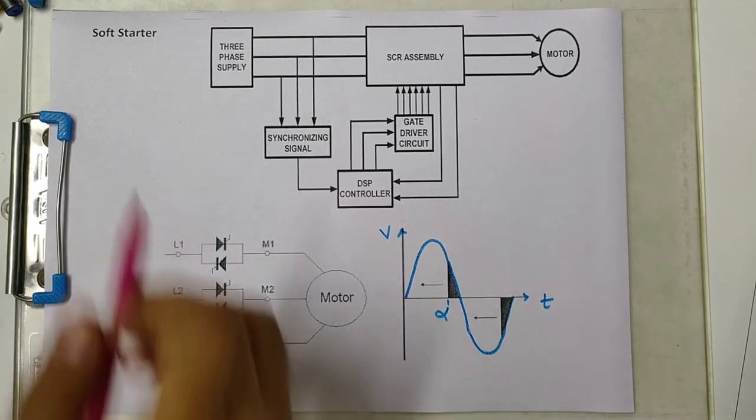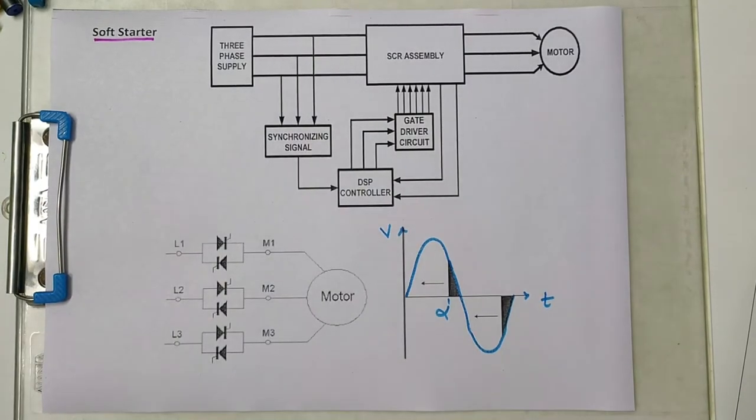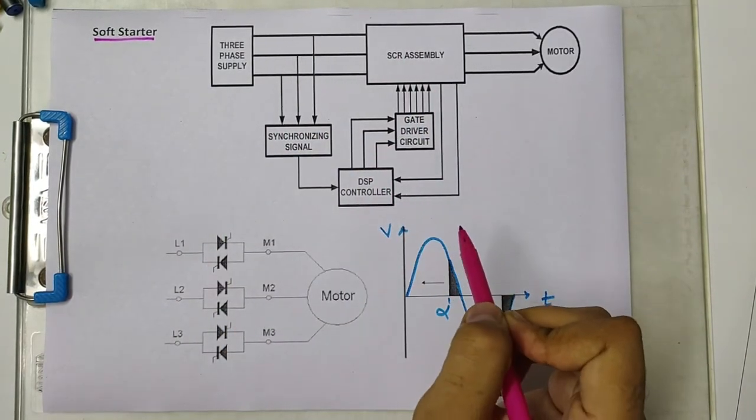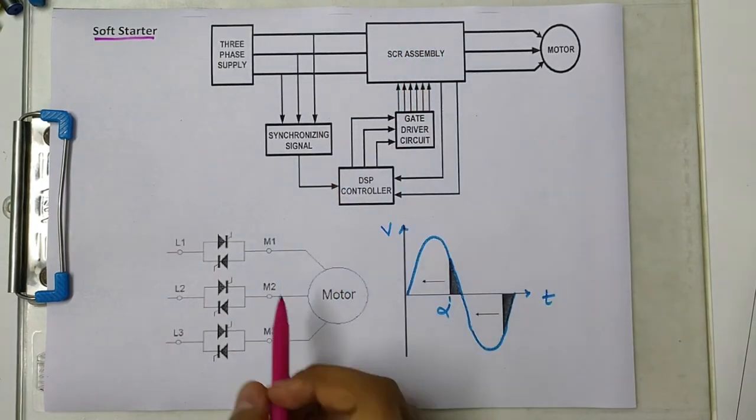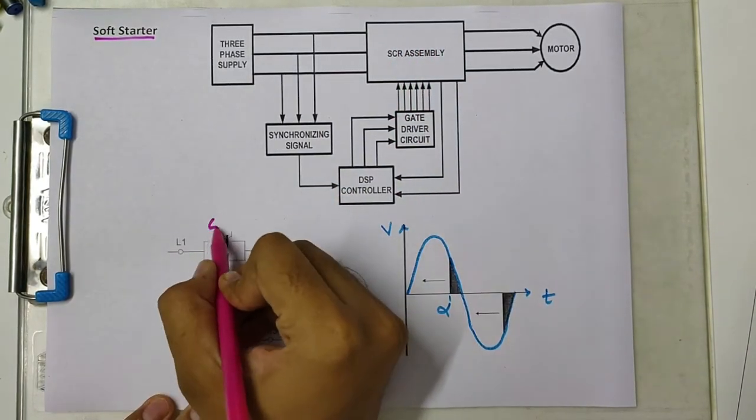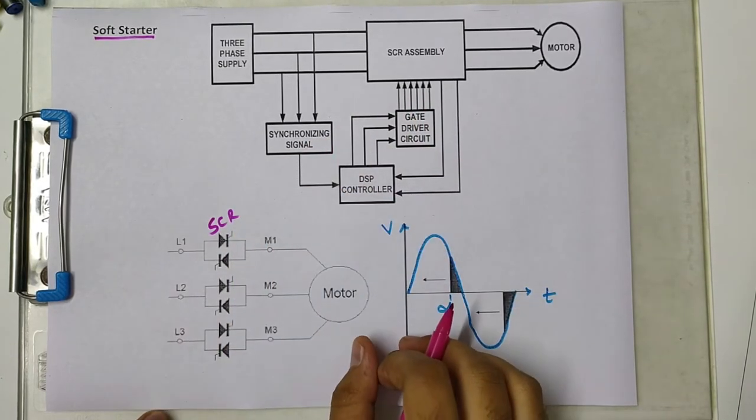In this video we will learn about soft starter for induction motor. This is the general schematic diagram of a soft starter. Basically, this SCR assembly consists of back-to-back thyristors or SCRs connected which are controlled using a microprocessor circuit.